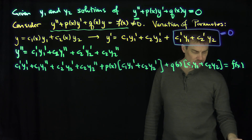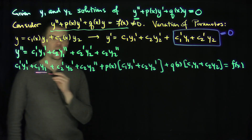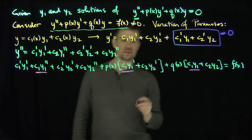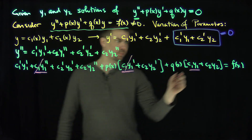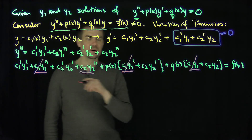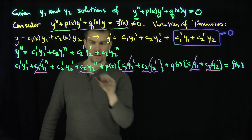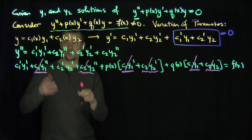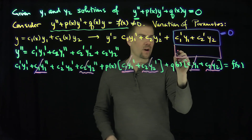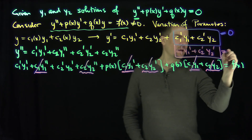Lots of terms cancel out — that's the whole point of this method. The terms c1 y1 double prime, c1 y1 prime times p, and c1 y1 times q cancel because y1 is a solution of the homogeneous problem. Likewise, the corresponding c2 terms cancel. What remains gives our second relationship: c1 prime y1 prime plus c2 prime y2 prime equals f of x.